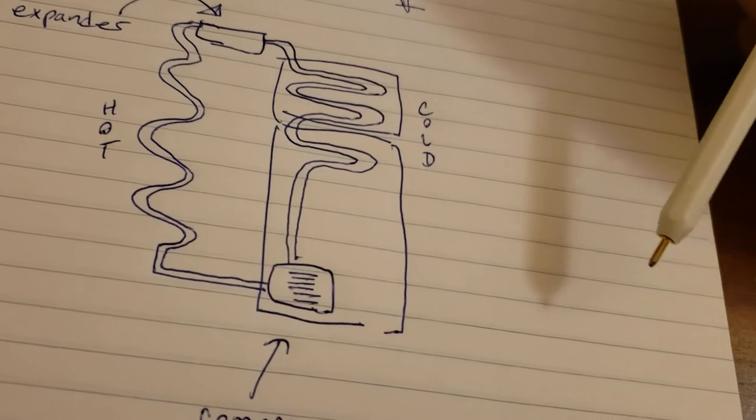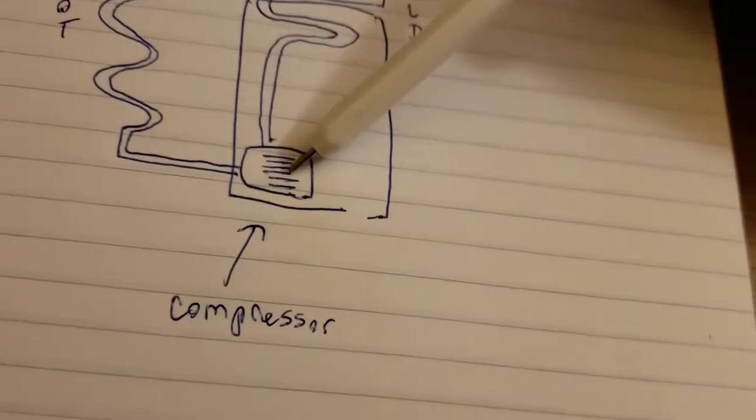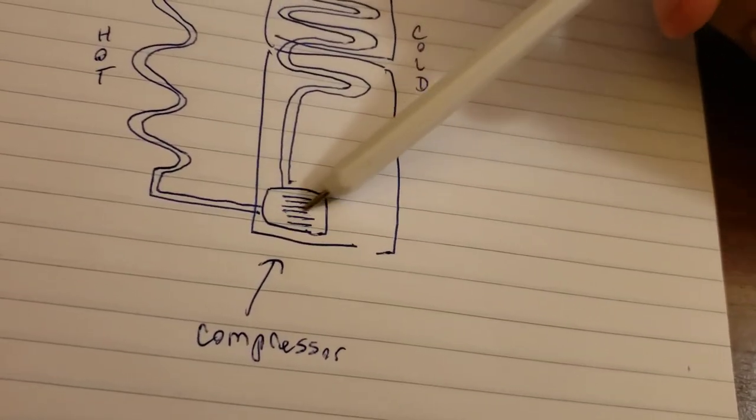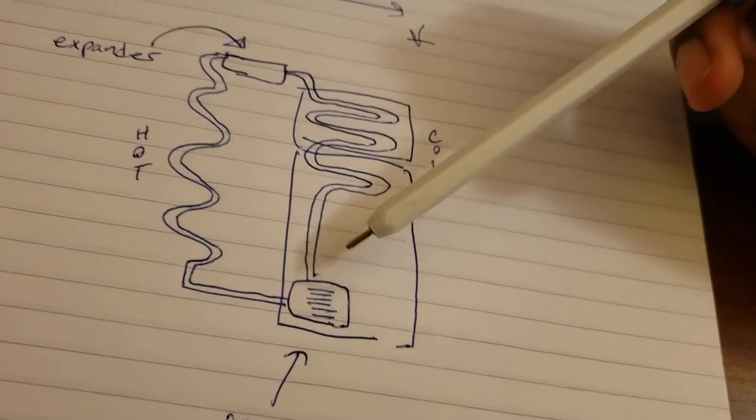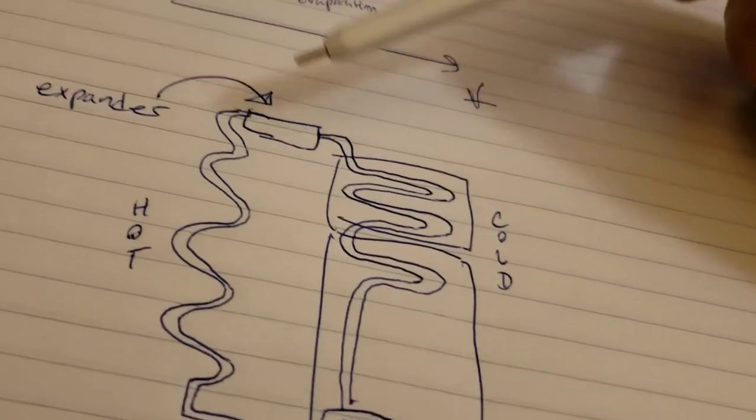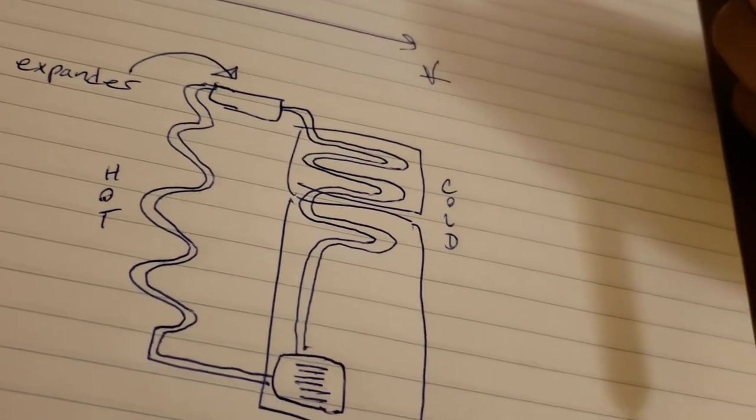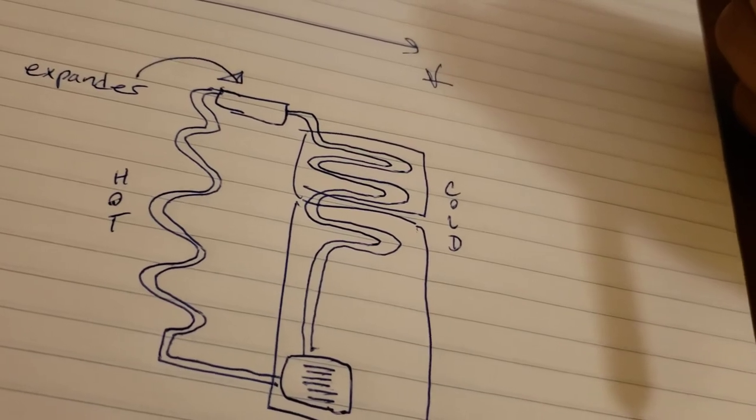And basically there's a compressor down here or some machinery that compresses the fluid slash gas and then there's an expander up here, which is going to expand the fluid slash gas.